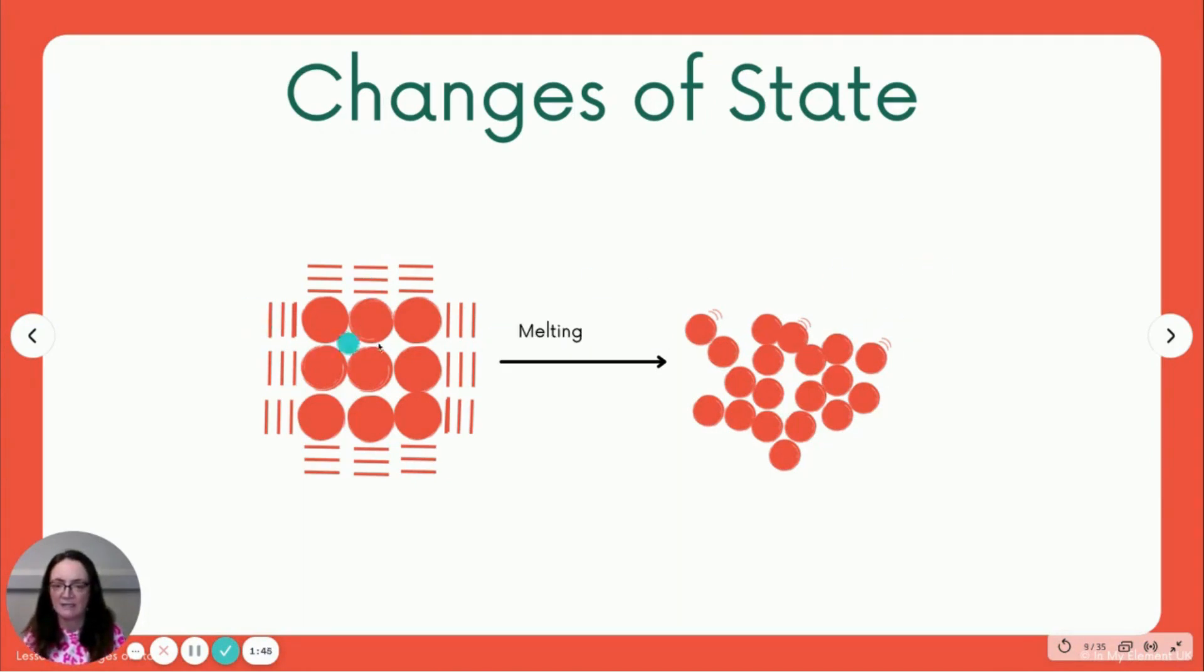So we've got a solid here and a liquid, and the change of state that is taking place is melting. We're going to give that solid energy and it will become a liquid, and it will change the particles. Look how they've changed in arrangement.